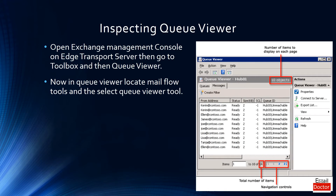Now let's inspect the queue viewer. Open Exchange Management Console on the edge transport server, then go to Toolbox and then Queue Viewer. In Queue Viewer, locate mail flow tools and select the Queue Viewer tool.